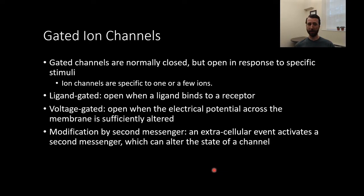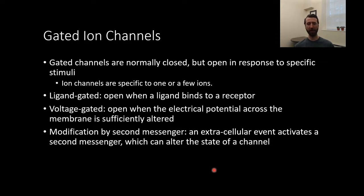Voltage-gated channels open when the electrical potential across the membrane is sufficiently altered. For example, a voltage-gated sodium channel opens when a change in voltage is sufficient. There's also modification by second messenger systems — an extracellular event will cause the activation of a second messenger, which is a little chemical messenger that can then alter the state of a channel. It's a more indirect way of opening a channel.